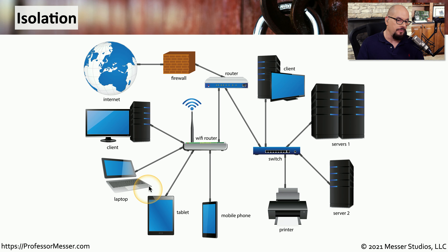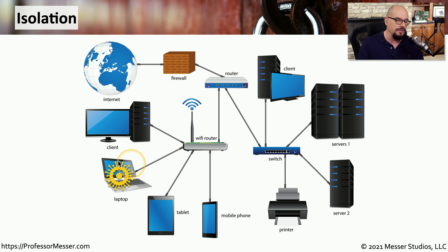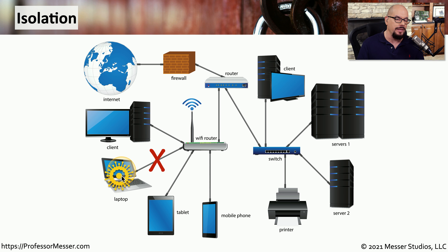We can normally communicate from our local laptop to any other devices on our network. If a device suffers some type of malicious software and becomes infected, we may be concerned it could also infect other devices. With an isolation policy, we can disable the connection between this laptop and the rest of the network, and we might also put this device on its own isolated VLAN, so it can only communicate to other devices on that isolated VLAN.